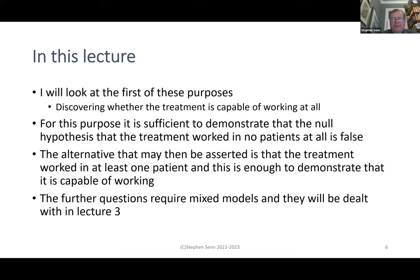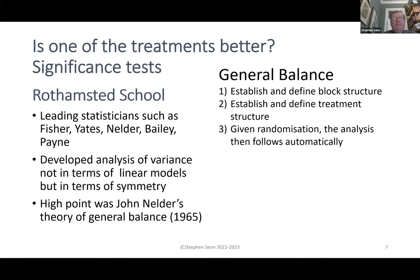In this lecture, I'm going to look at the first of these purposes — associated with significance tests, analysis of variance, and this sort of thing. The further questions require mixed models and will be dealt with in lecture three. Leading statisticians involved with this include Fisher himself, Frank Yates, John Nelder, Rosemary Bailey, and Roger Payne for computational development. Analysis of variance has developed not so much in terms of linear models but in terms of symmetry, with a high point being John Nelder's 1965 papers on general balance.